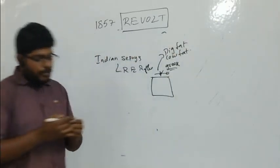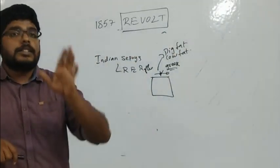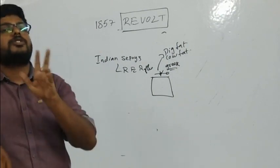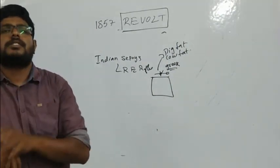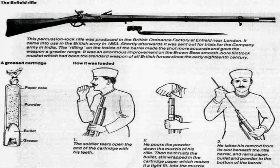There was a rumor that the grease used on the cartridge pin contained pig fat and cow fat. Indian sepoys consisted of Hindus, Muslims, and Sikhs. For Hindus, the cow is a sacred animal, so they denied using the Royal Enfield rifle. For Muslims, the pig is considered a forbidden animal according to the Quran, so Muslims also rejected using the Royal Enfield rifles.